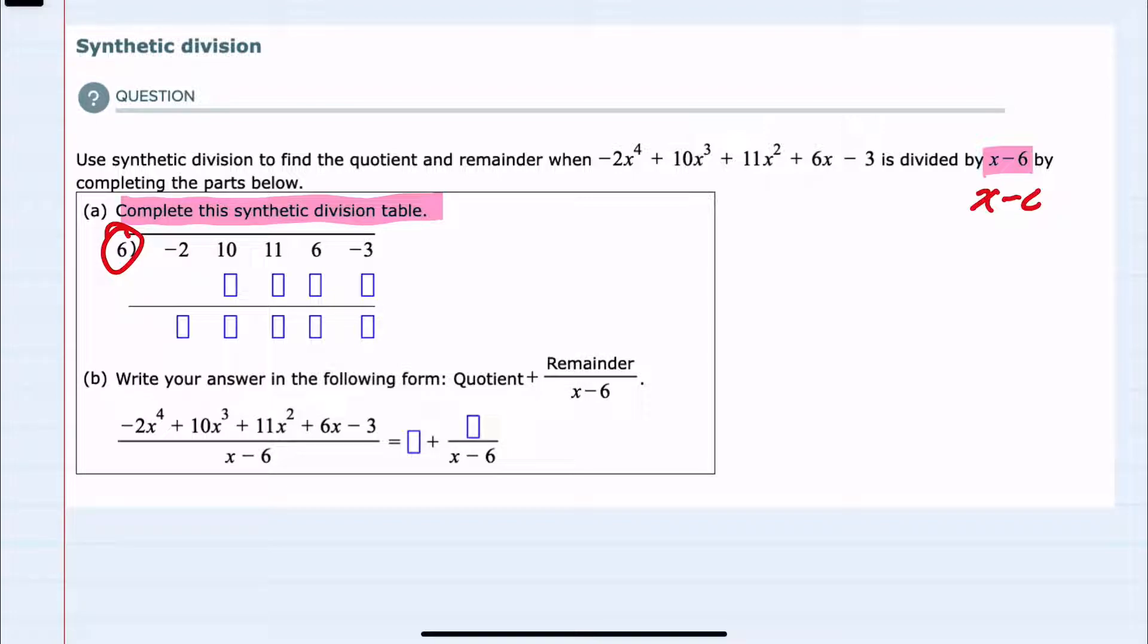Underneath here we have each of the leading coefficients in descending order. If we were missing any of these terms we would add in a zero, but again for this example it's already been set up so we can just follow the steps of synthetic division which starts by bringing down that first coefficient negative 2.